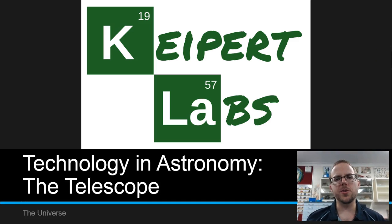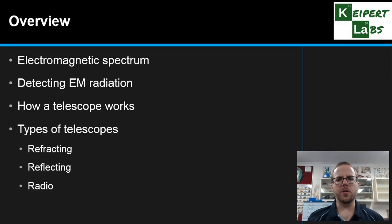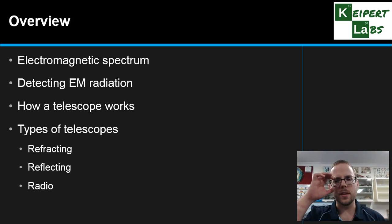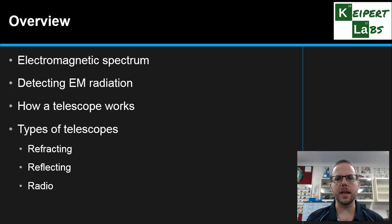Let's start with an overview. In this video we're going to revisit the concept of the electromagnetic spectrum, looking at how we can detect electromagnetic radiation from distant objects in the universe like other stars, and then focusing on the telescope — starting off by looking at how a telescope works and then looking at some of the different types of telescopes that exist, such as reflecting, refracting and radio telescopes.